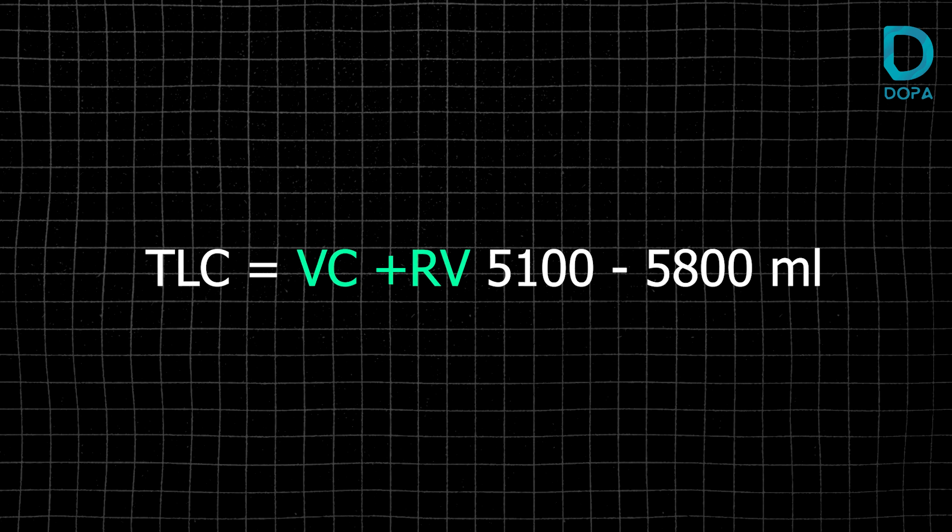The total volume is equal to 500 plus upper limit of inspiratory reserve volume 3,000, so 500 plus 3,000 is 3,500. Expiratory reserve volume is 1,100, so 3,500 plus 1,100 is 4,600. Adding RV of 1,200 gives 5,800. So total lung capacity ranges from 5,100 to 5,800 ml. Breathing and exchange of gas — see you next episode!